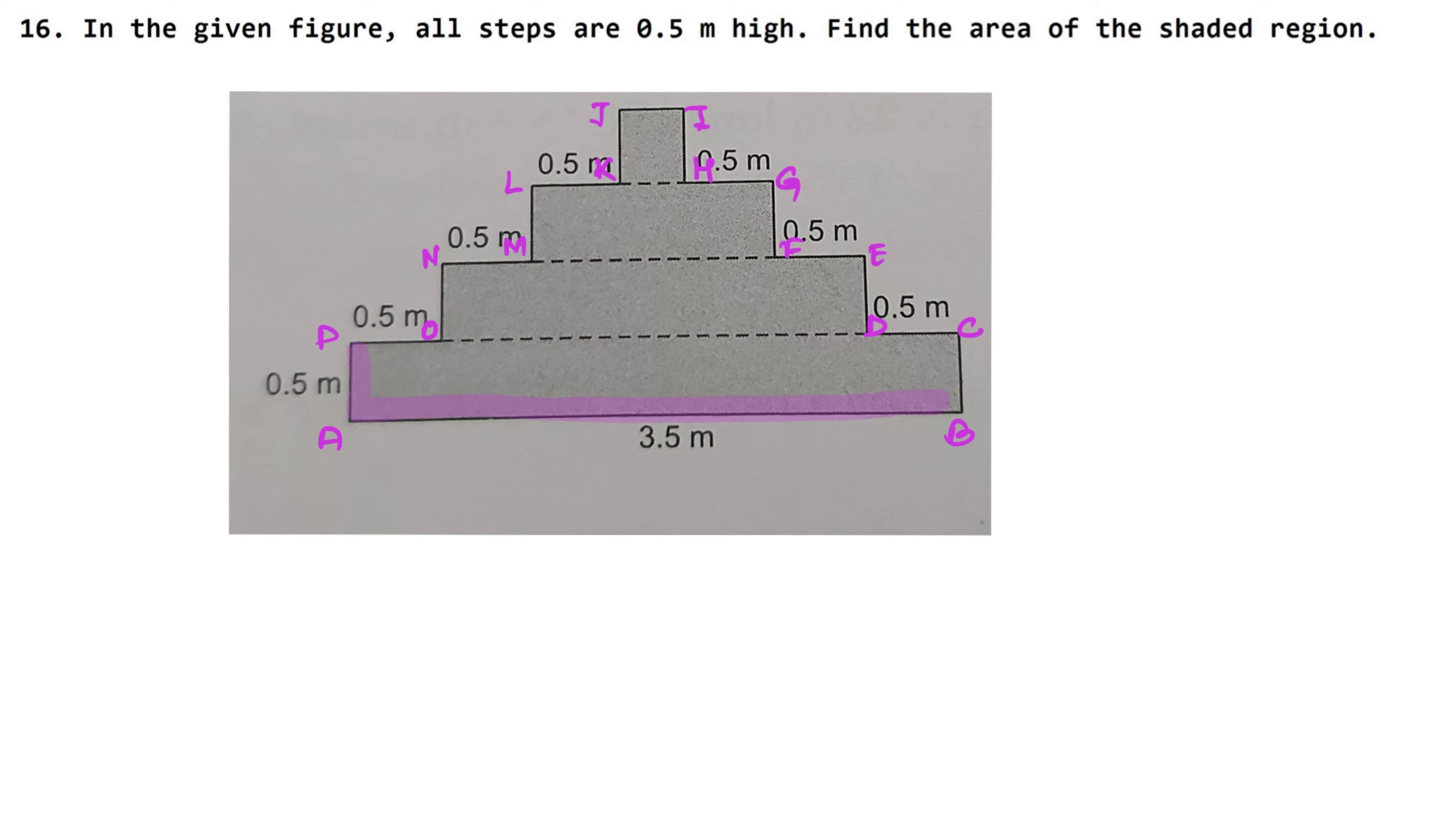We want to make rectangle ABCP. We will calculate the area. How much is it? AB into AP. AB was 3.5 meter and AP was 0.6 meter. So how much is it? 5 times 5 is 25, carry 5, 3 times 5 is 15, 16, 17. Now because 1 digit is here and 1 digit here, this is 1.75 meter square.